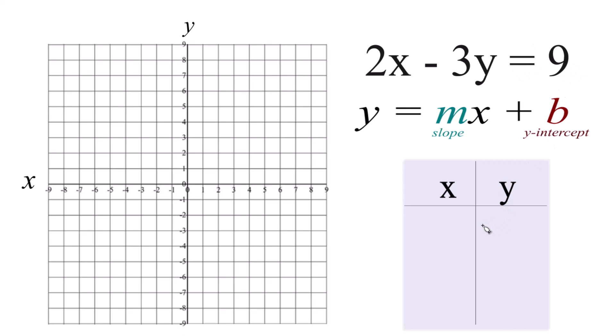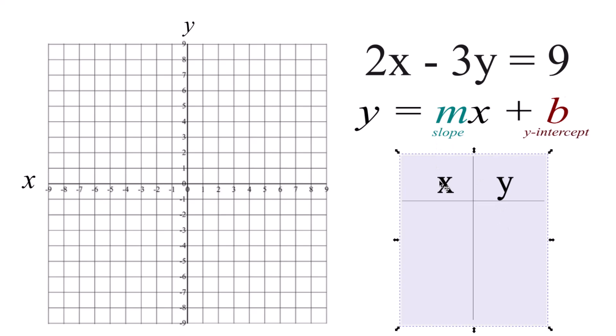We could use this table of values down here, put values in for x and figure out y. It's a little bit messy and it gets to be a little bit of work here. So I want to use slope-intercept form. I think that's a little quicker.